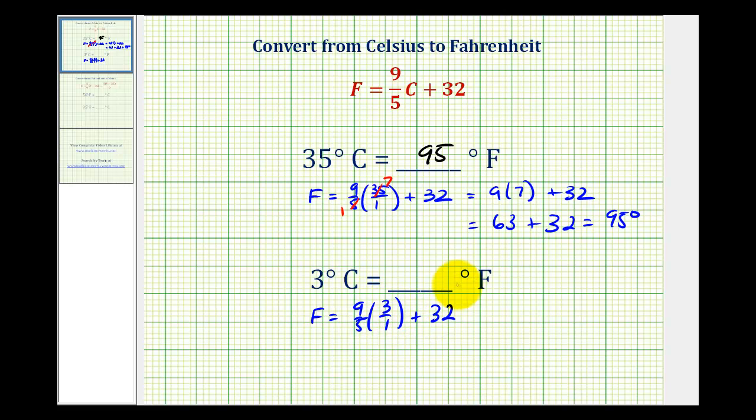Nothing simplifies here, so we have 27 fifths plus 32. Let's go ahead and convert 27 fifths to a decimal. Remember, this means 27 divided by five. So if we have 27 divided by five, there are five fives in 27.